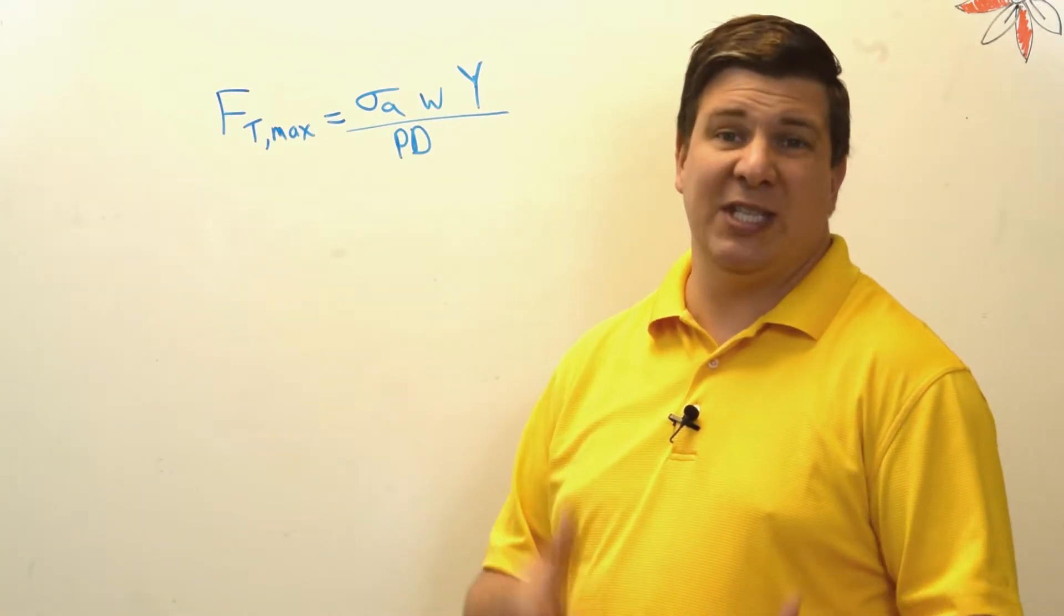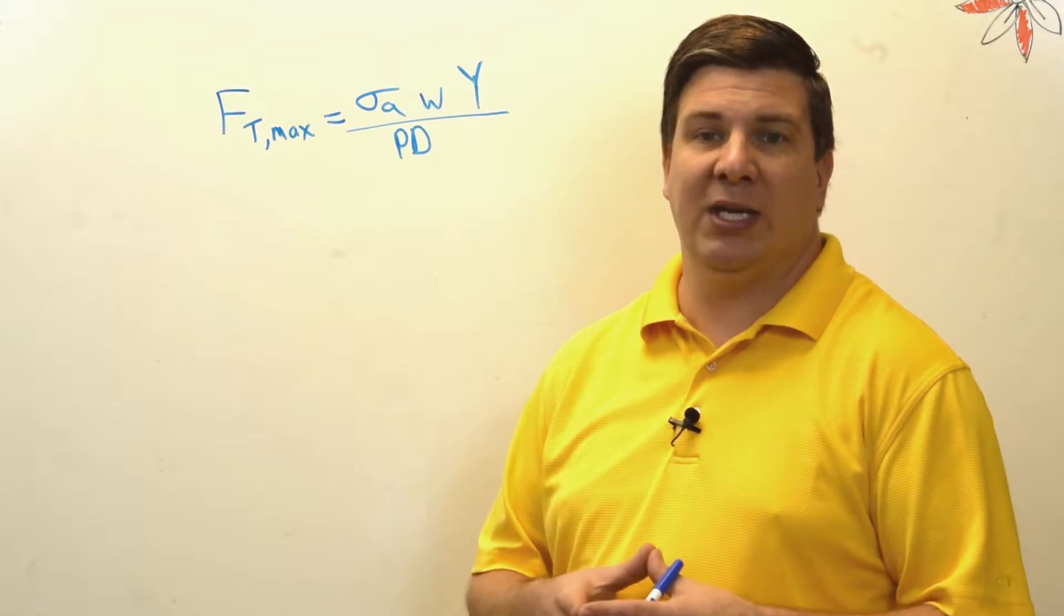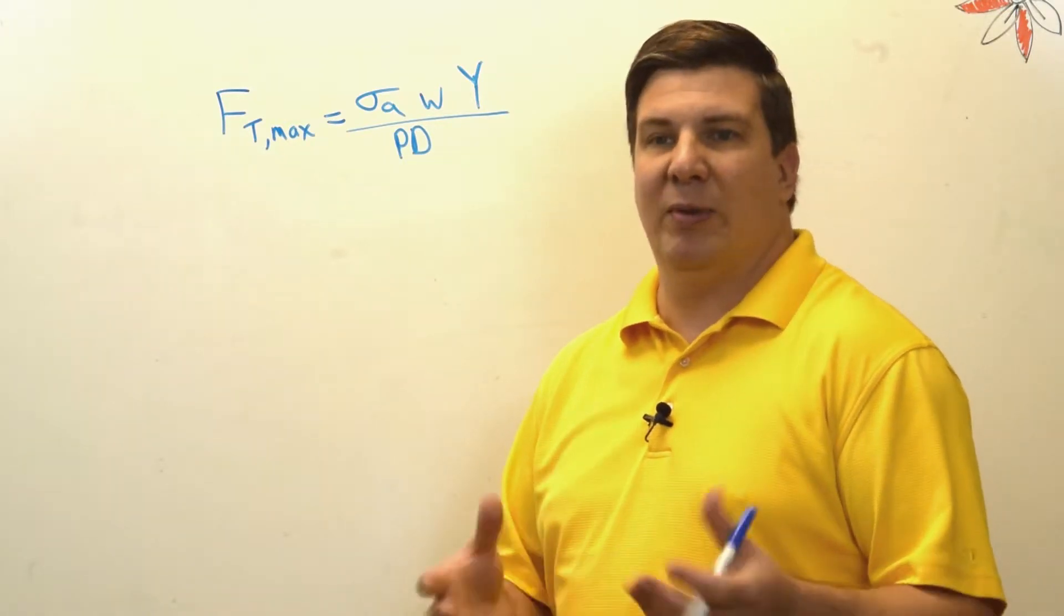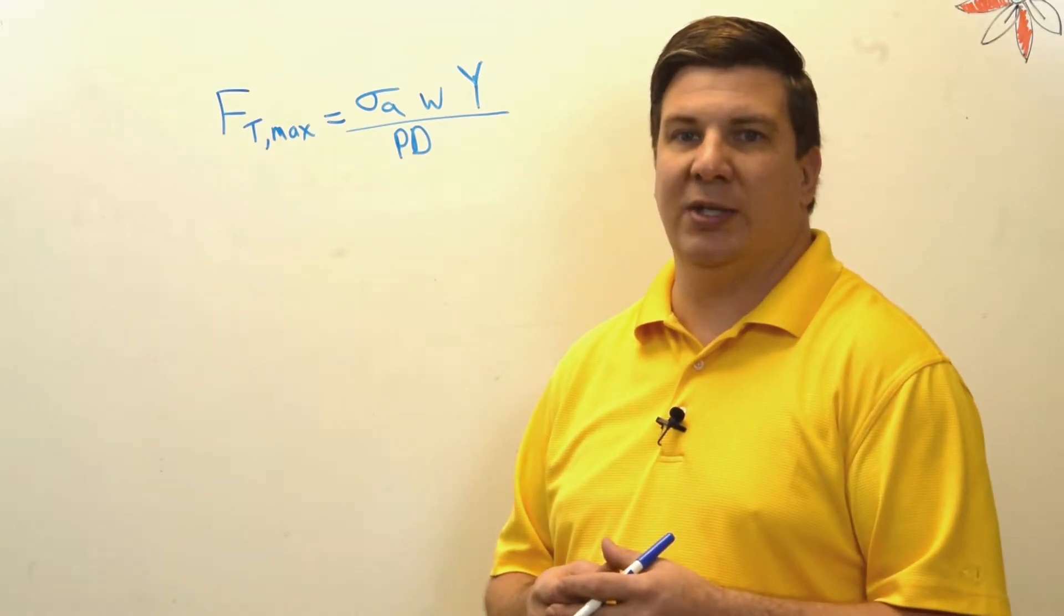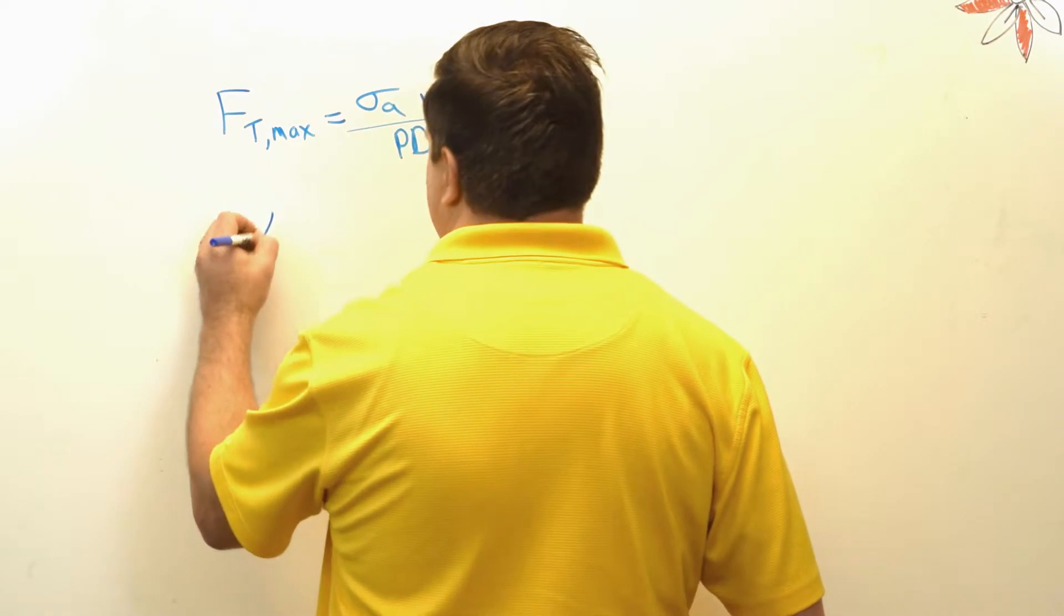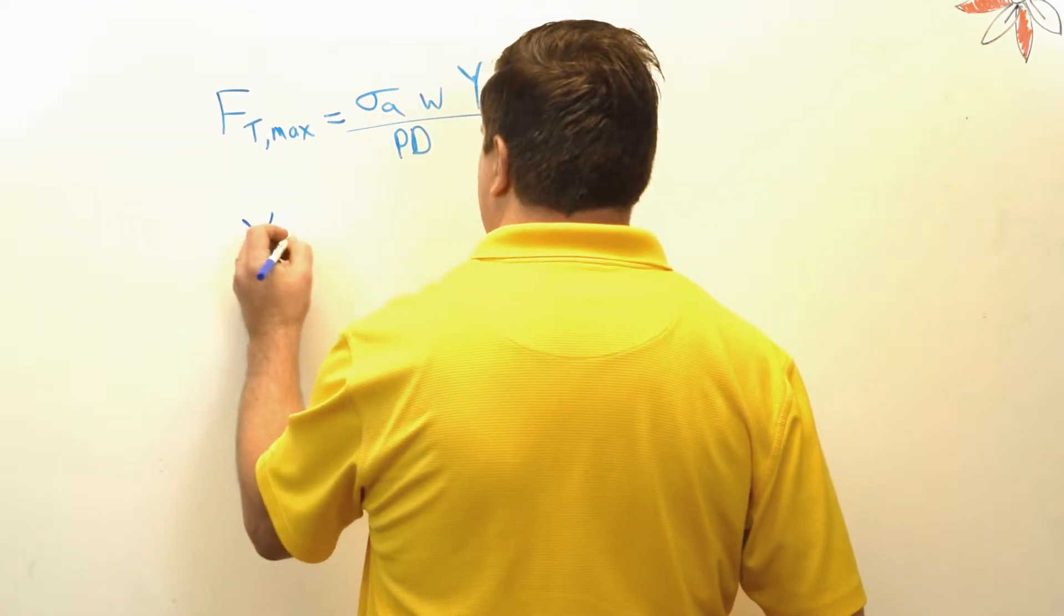So the Lewis form factor is a value that has been tabulated. I have a tabulation on my website. If you search for Lewis form factor on my website, you will find the table there, and Lewis form factor is a value that's been empirically founded.